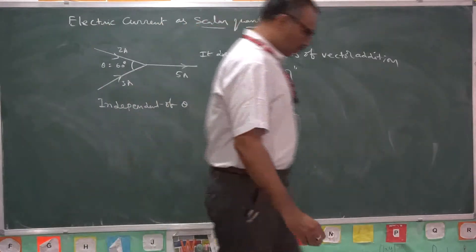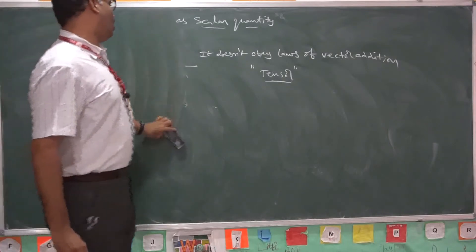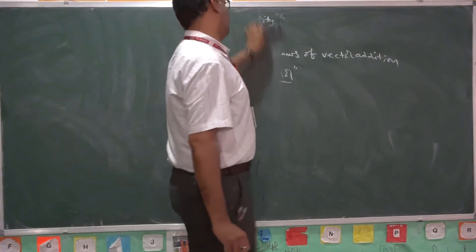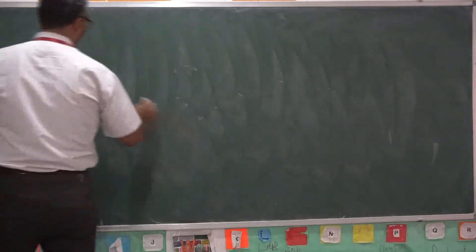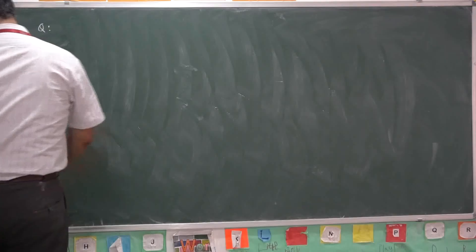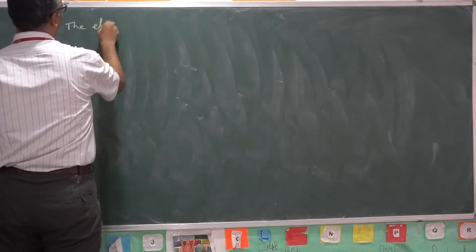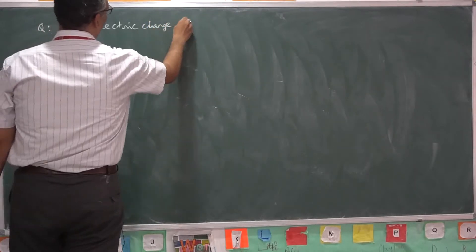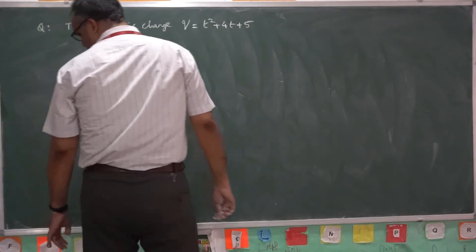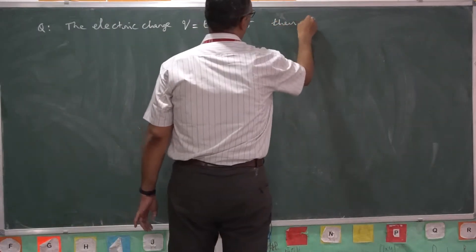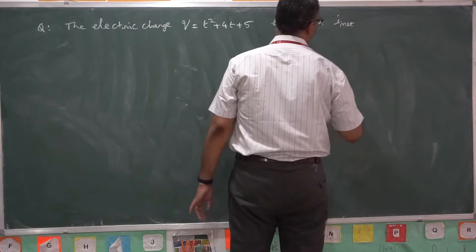So far we discussed the definition of electric current and what is average current and what is instantaneous current. Now let us see some applications. For example, a question: the electric charge Q as a function of time is given as Q = t² + 4t + 5. Then find instantaneous current at t = 3 seconds.